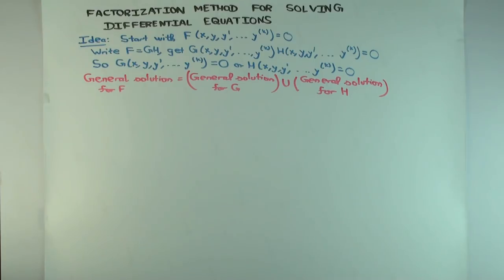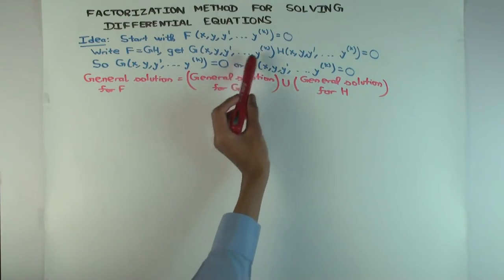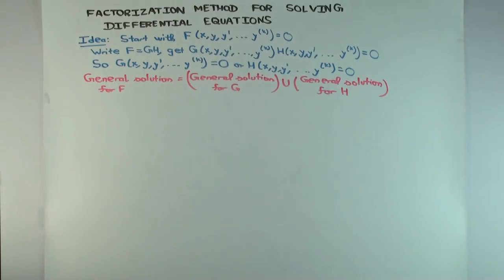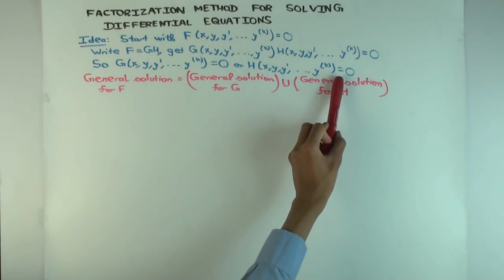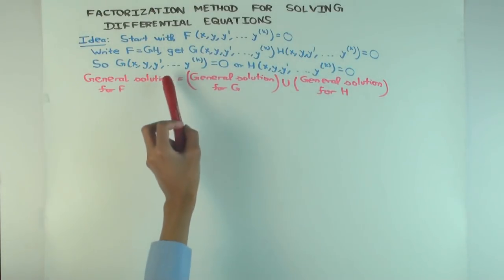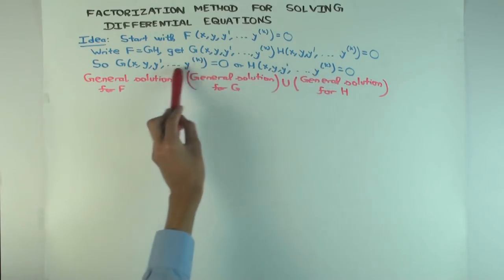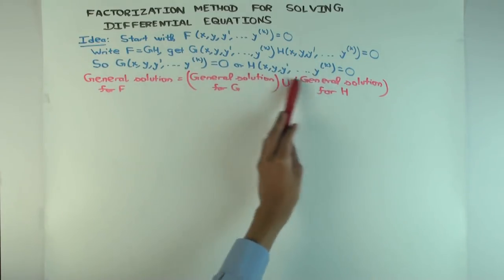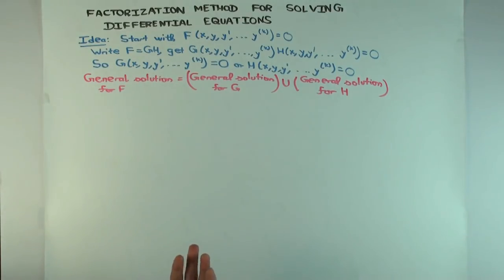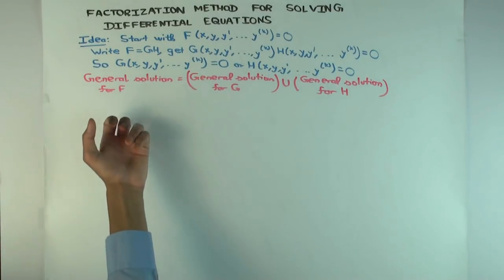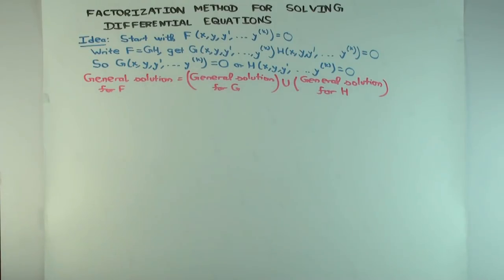You know that the product of two things is zero means one of them is zero, right? So either this is zero or this is zero. So we have to find all solutions for this, find all solutions for this, find general solution for this, general solution for this. And then the general solution for F is just, something is a solution for F if it's either a solution for G or a solution for H.